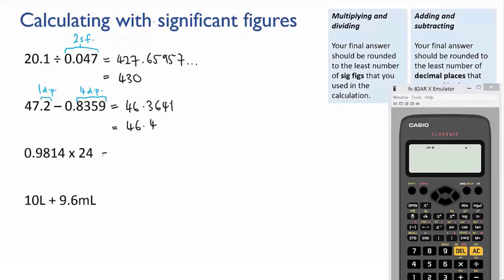All right, next 0.9814 times 24. We put that into the calculator and we get 23.5536. Of the two numbers that we used, 24 has the fewest sig figs, it has two. So our final answer must also be rounded to two sigs which gives us 24.